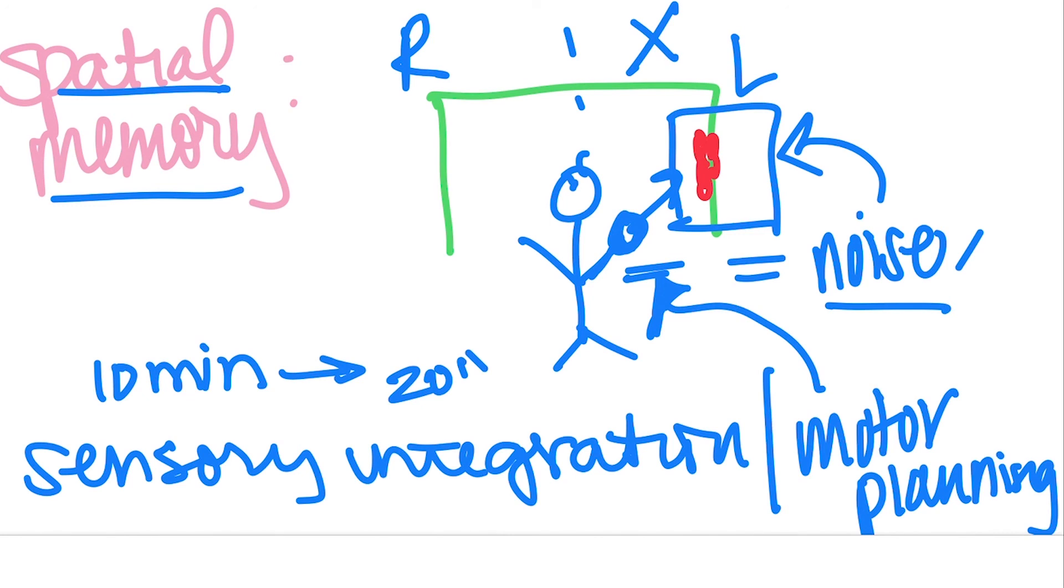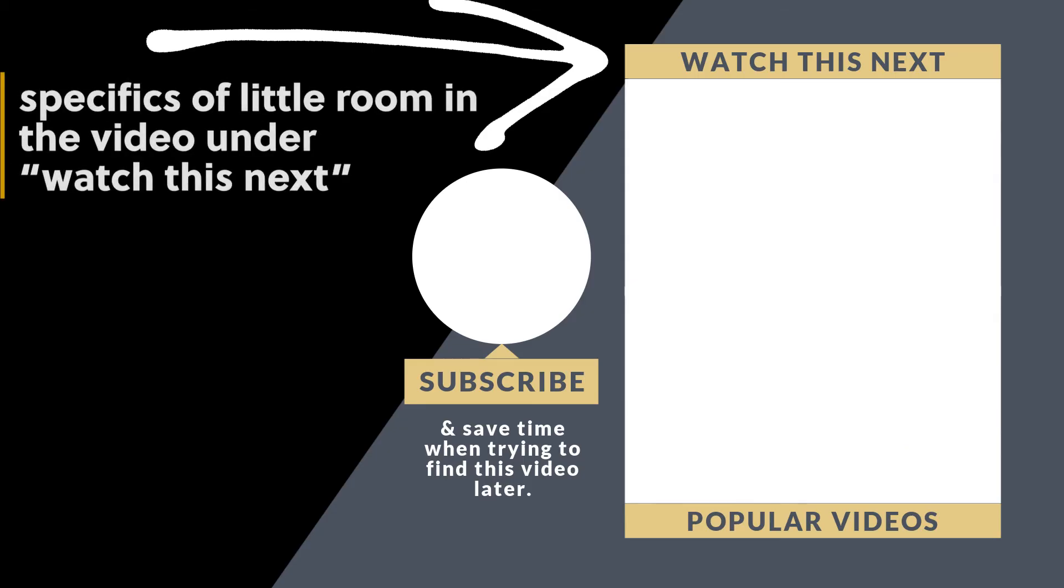That sensory integration is going to be through objects that have a noise-making component, objects that have different textures, objects that are different colors. So even if a kiddo doesn't have full loss of their vision, they can start to train that head control, that eyeball strengthening, start to be engaged with objects with a shiny component or maybe a reflective component, things like that.